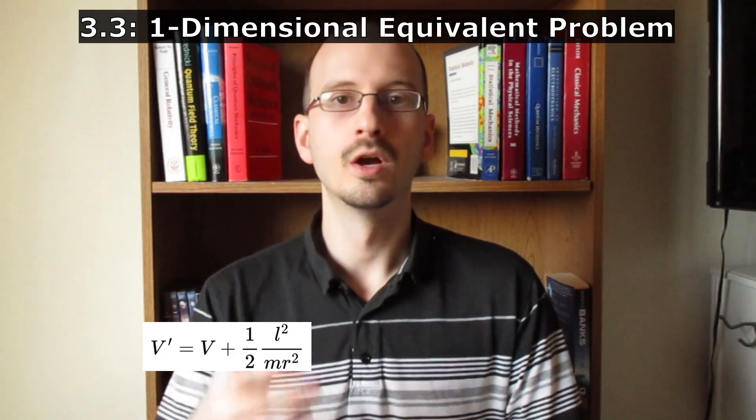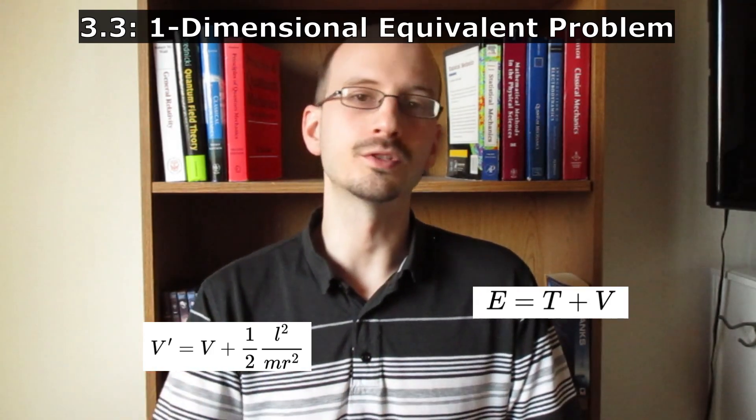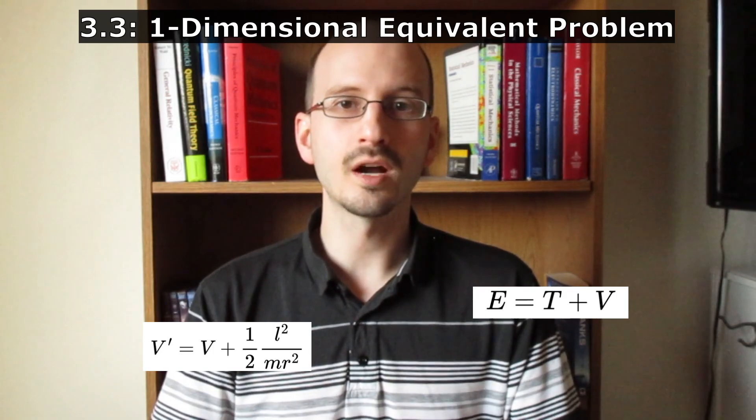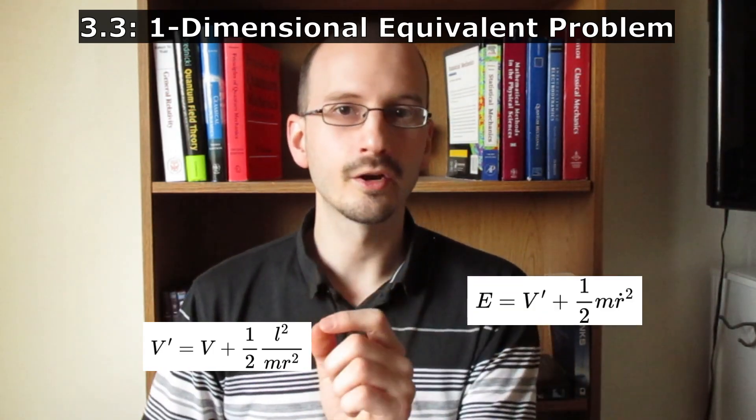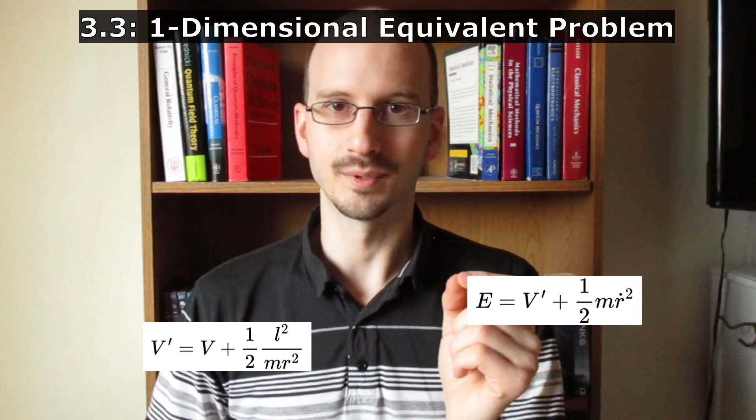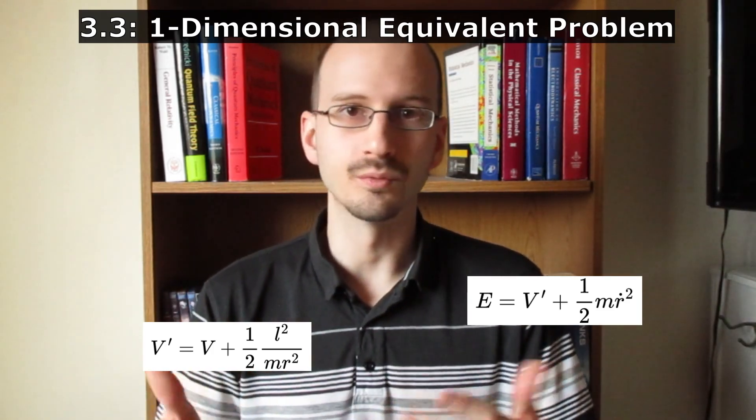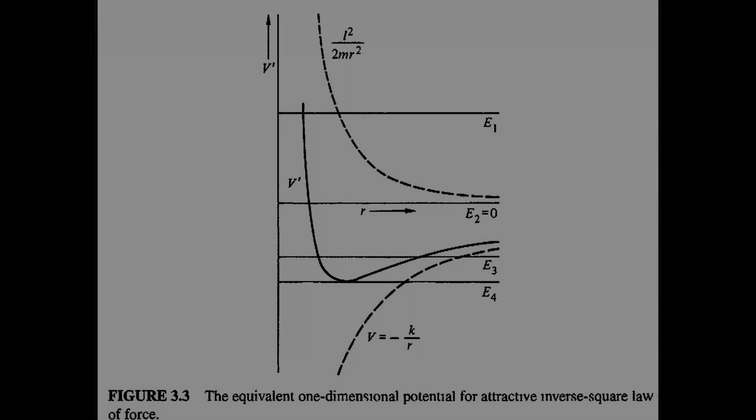As we know, energy is conserved. Ordinarily, energy is equal to potential energy plus kinetic energy. In the one-dimensional problem, the conserved energy is the kinetic energy plus the effective potential energy. This gives us an energy plot, which, at least for 1 over r squared forces, looks like this.